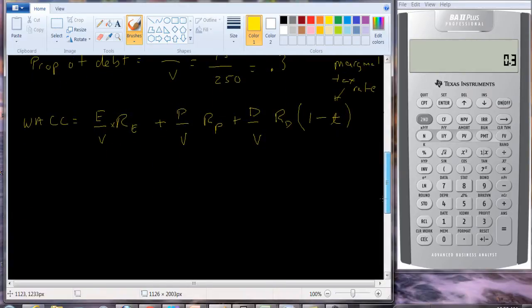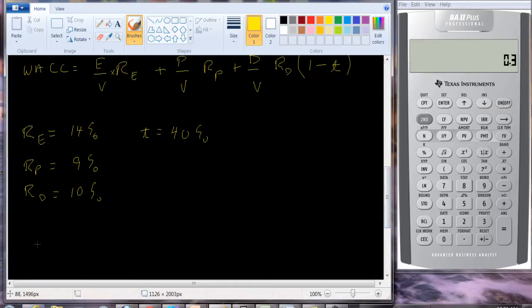All right, let's try and do a numerical example here. Let's assume that we've already calculated the required return to equity, and that's 14%. That the return to preferred stock is 9%. Again, I could have made a more detailed problem here where we calculated everything. But it's rather difficult to do because YouTube limits you to 15-minute videos. So I'm going to assume we've already done these. You can see the previous tutorials for how they're done. And we need a tax rate. So let's assume the tax rate is 40%. So we just plug into this equation to get the weighted average cost of capital.